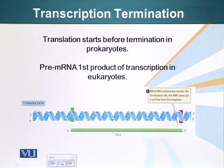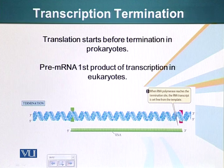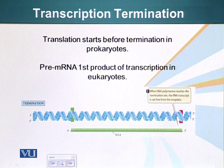In eukaryotes, the first messenger RNA that is made is called the pre-messenger RNA, and it goes through modifications. We will talk about those modifications later, but the first RNA made by eukaryotes in the nucleus is the pre-mRNA.